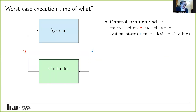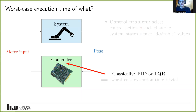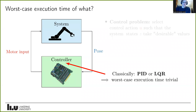The worst-case execution time of what exactly? I'm interested in the control problem, which very abstractly is selecting a control action given the current state. For example, with a robot we might want to control its pose by computing some motor input. Classically these controllers have been PID controllers or LQR controllers, and from a real-time perspective they are really nice because the worst-case execution time is trivial — just a finite number of multiplications and additions.